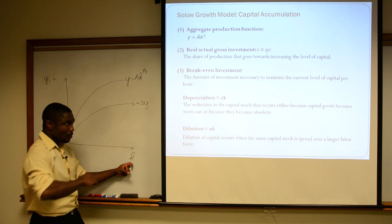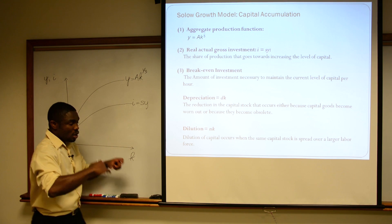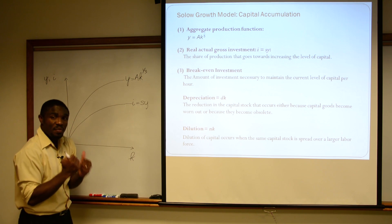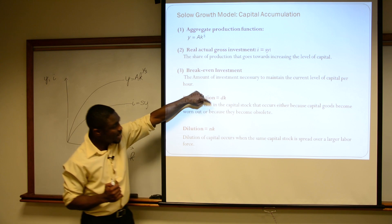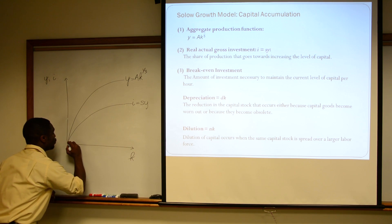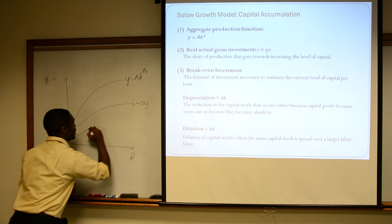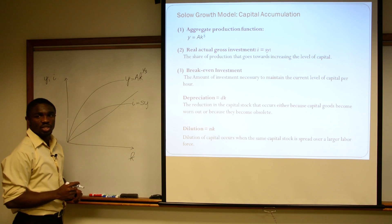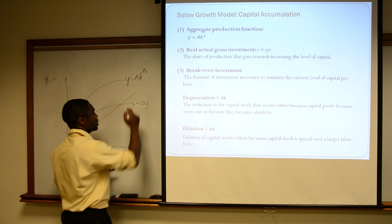You can now see that our break-even investment is going to be (D + N) times K. D and N are just constants, and it's saying the more capital we have, the more investment we need to keep that capital unchanged.